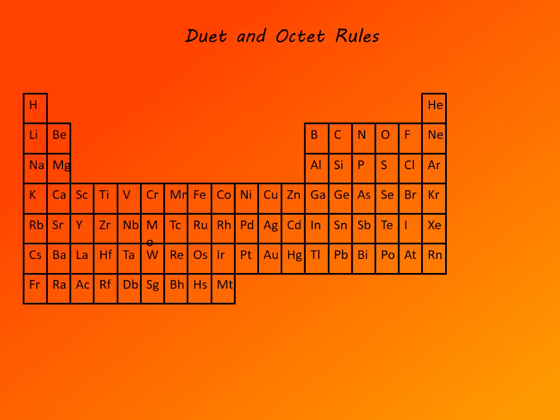To form a chemical bond, atoms either transfer or share electrons. How many electrons can be in the outermost shell, valence shell, is determined by duet and octet rules.